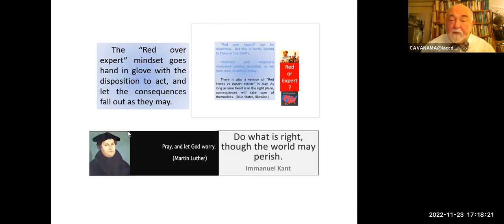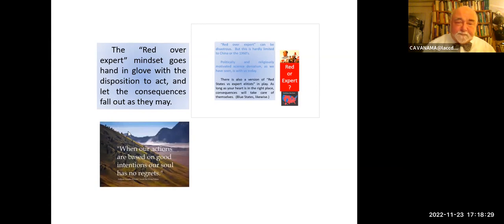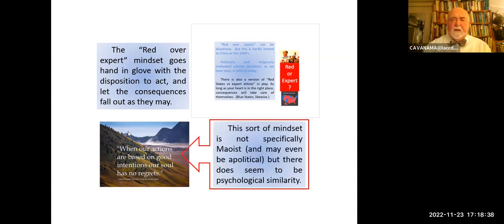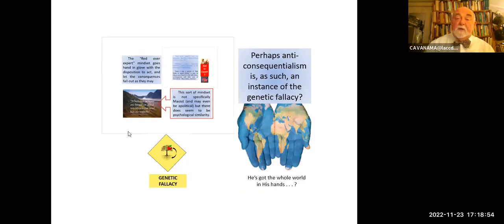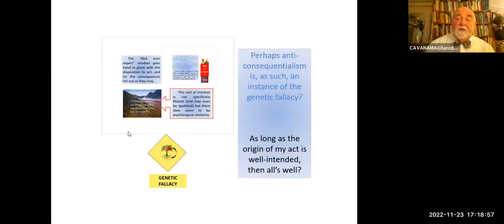As Martin Luther said: 'Pray and let God worry.' Or Immanuel Kant: 'Do what's right, though the world may perish.' Lots of people say this: when our actions are based on good intentions, the soul has no record. The road to hell is paved with good intentions. This is a mindset that's not specifically Maoist, and it may even be apolitical. Perhaps anti-consequentialism is as such an instance of the genetic fallacy — don't worry about the consequences; as long as the origin of my act is well intended, then all's well.